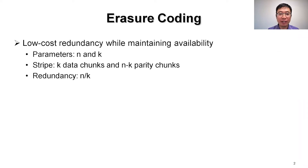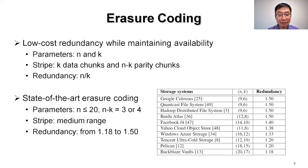Erasure coding is a low-cost redundancy scheme against failures in many storage systems. It encodes k data chunks into n-k parity chunks to form a stripe. Compared to replication, it has a lower redundancy, that is, n over k. In many state-of-the-art erasure coding storage systems, the stripe is often configured in a median range — n is larger than 20, and n-k is 3 or 4 — so the redundancy ranges from 1.18 to 1.5.